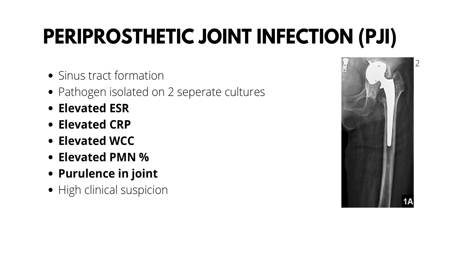An elevated ESR, elevated CRP, raised white cell count, high synovial neutrophil percentage, presence of purulence in the joint, and once again the isolation of a microorganism on culture of the periprosthetic tissue or fluid.